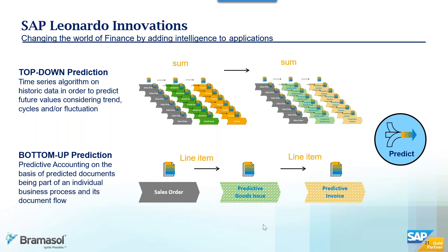There's also the aspect of different periods. A sales order might be in period one, but based on customer payment terms — net 30, net 60, or net 45 — the predictive aspect looks at what's expected or committed from the sales order, knowing the order may change, and predicts how much revenue will fall in period two versus period three based on those payment terms. So there's a whole timeline aspect associated with predictive accounting as well.